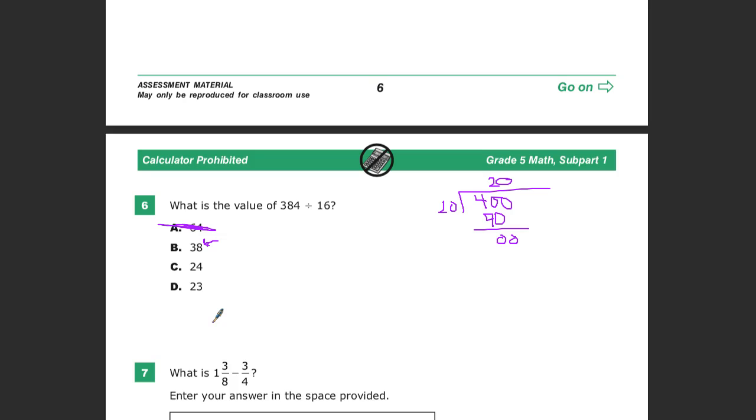That way, if you're not really sure and you have trouble remembering how to do all the pieces, you have some general feel for, well, it's probably in this area, so I'm just choosing between two. And that raises my odds from 25% to 50%, which is pretty good.